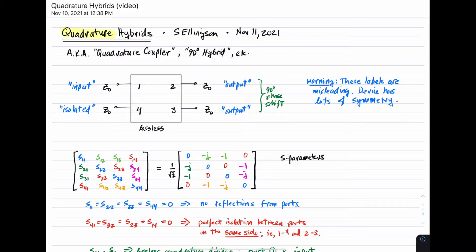Hi, welcome to a lecture on quadrature hybrids. Quadrature hybrids are devices which go by various other names, for example, quadrature couplers, 90-degree hybrids. These are usually the same thing.